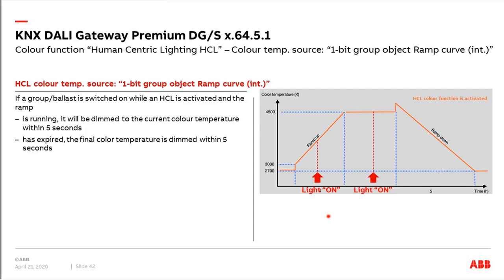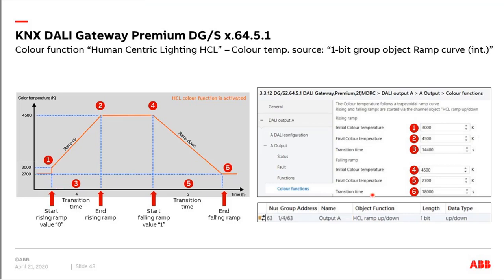If HCL is deactivated but the ramp is still running in the background and the light is switched on, it automatically goes to the current ramp value within 5 seconds. The complete parameter overview shows: for ramp up, initial value 3000 Kelvin to final value 4500 Kelvin with a transition time of about 4 hours; for ramp down, from 4500 to 2700 Kelvin in 5 hours (18000 seconds). The group object 'HCL ramp up and down' triggers ramp up with value 0 and ramp down with value 1.